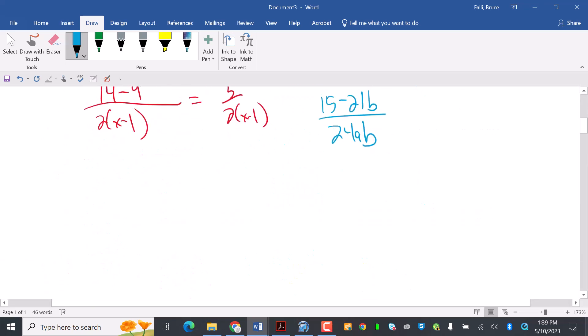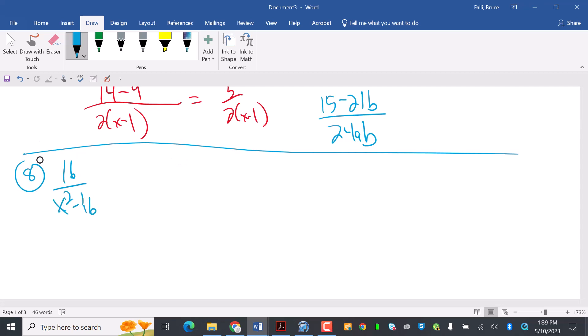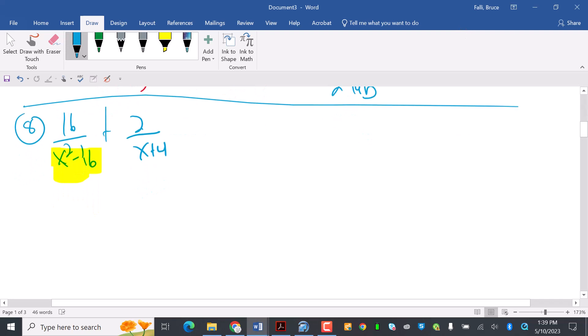Number eight is 16 over x squared minus 16, plus 2 over x plus 4. Now, I think you're a lot better at recognizing the difference of two squares than I was at your age. So this right here is the difference of two squares. So that means I really have 16 over x plus 4, x minus 4. And I did that, square root of x squared is x, square root of 16 is 4, plus and minus.